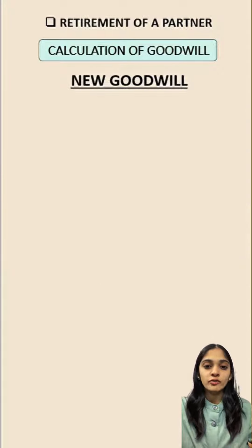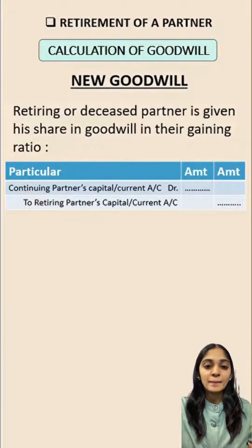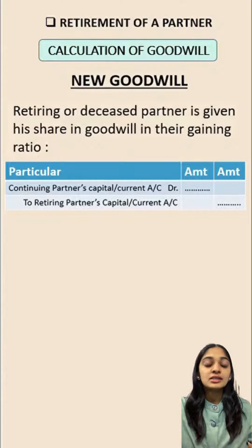Next is new goodwill. This goodwill is to be given by the continuing partner to the retiring partner. The journal entry will be continuing partner's capital account debit to retiring partner's capital account. Continuing partners are paying the goodwill, so their capital account will be debited, and the retiring partner is receiving the goodwill, so his capital account will be credited. This is distributed in their gain ratio.